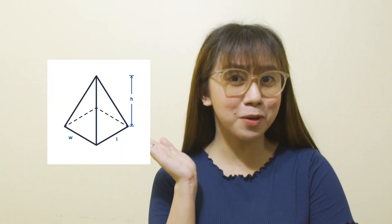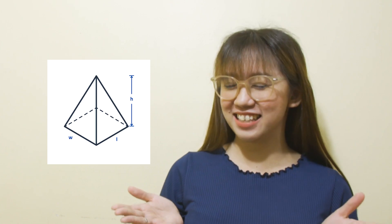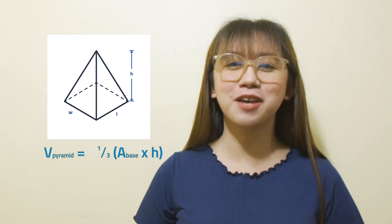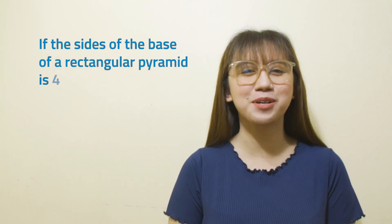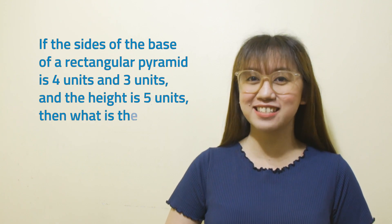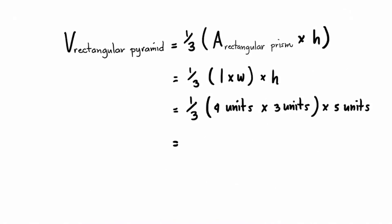How about the volume of a pyramid? The volume of a pyramid is equal to one-third of the product of the area of the base and the height. That is, volume of pyramid equals one-third times the area of the base times height. The area of the base of a rectangular pyramid times height equals one-third times the product of length times width times height.